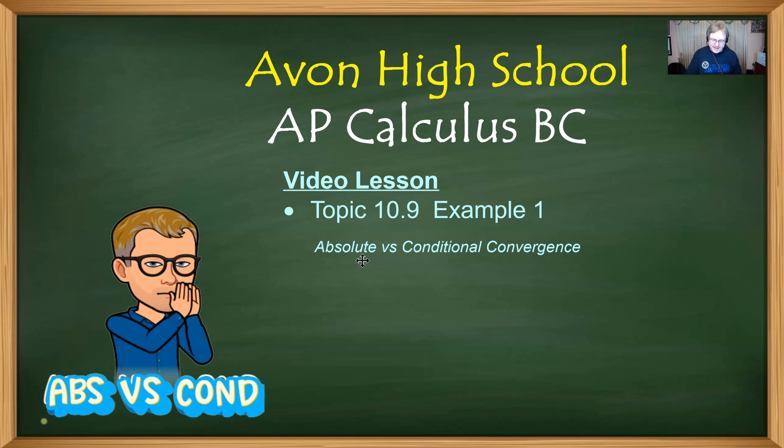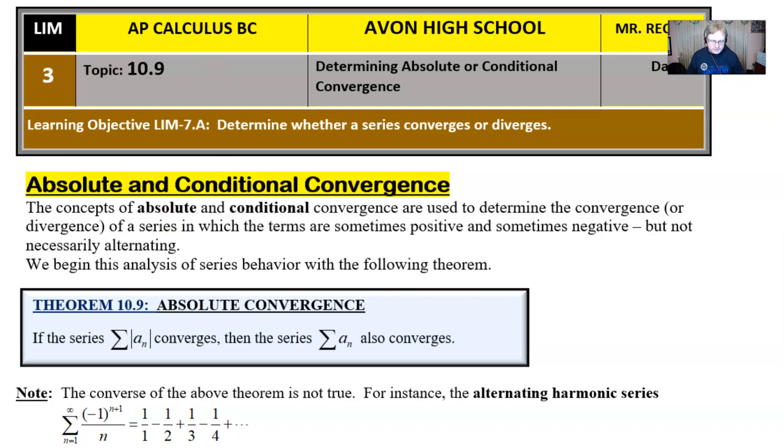So let's see what I mean by absolute versus conditional convergence. The concepts of absolute and conditional are going to be used to determine the convergence of a series in which the terms alternate. Sometimes the terms positive, sometimes the terms are negative. They don't necessarily have to alternate. Anytime that you have a series that has some positives and negatives in any kind of arrangement, we can still use this idea of absolute and conditional convergence, but the most common series that we apply it to is the alternating series.